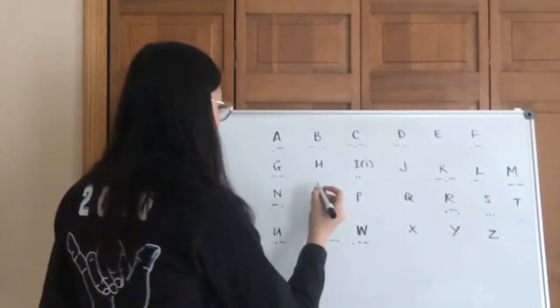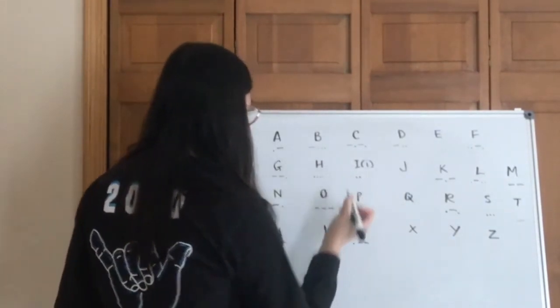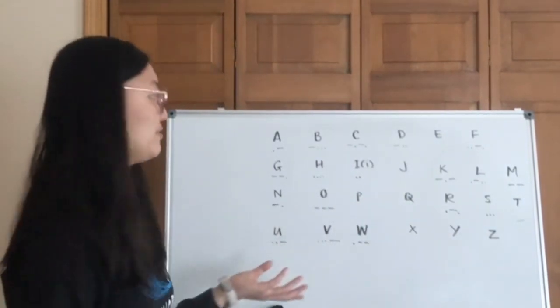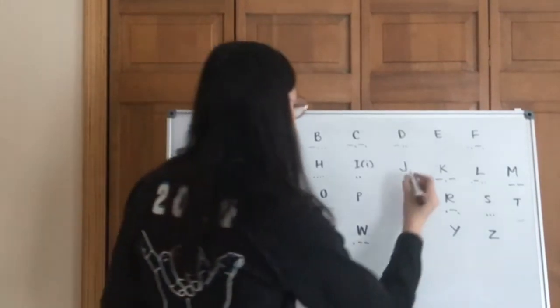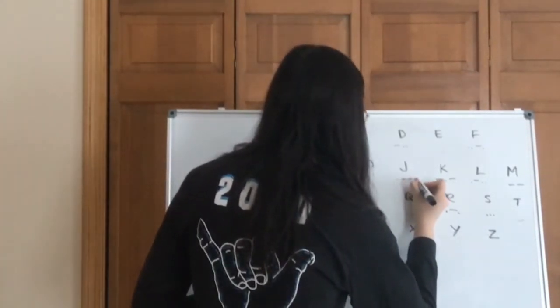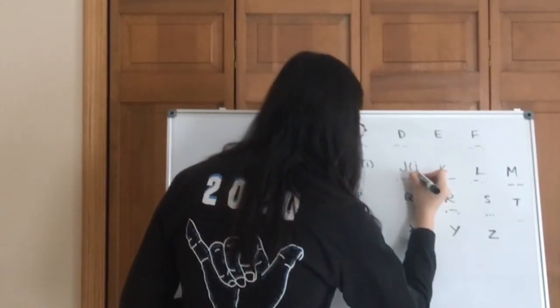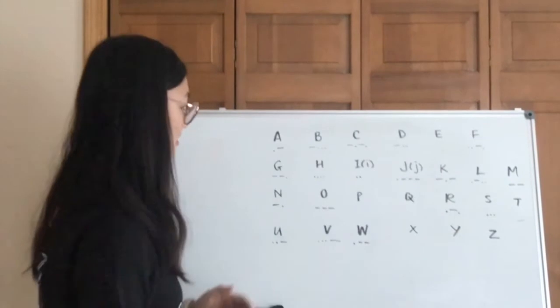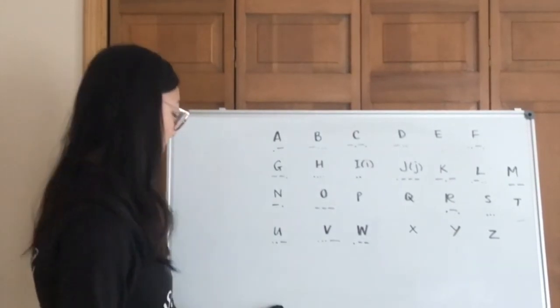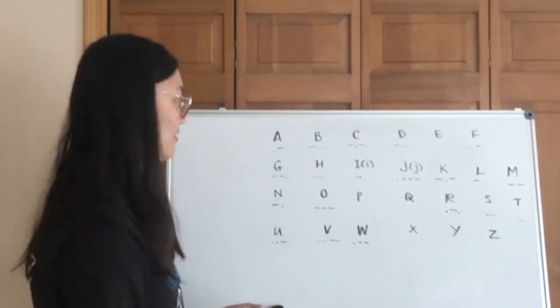And then H is going to be four dots. So hopefully that'll be pretty easy to remember. And then J is dot dash dash dash. You can kind of memorize it by saying, okay, there's a dot on top, and then it's a long hook as the lowercase J. So that's kind of how I remember it.